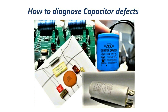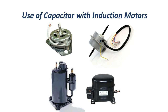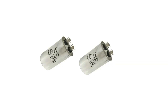This video is about how to check and find out a capacitor defect. We use capacitors in all appliances like air conditioners, washing machines, and refrigerators. A capacitor is a short-span battery — it gets charged and gives torque to the motor.